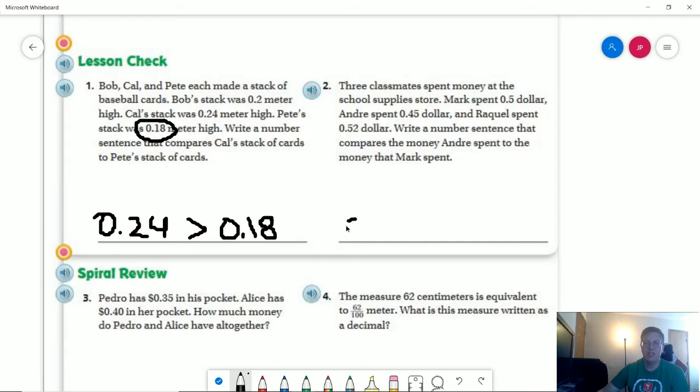Andre spent forty-five hundredths of a dollar, or forty-five cents. Mark spent fifty cents, or five tenths of a dollar. So forty-five hundredths would be less than five tenths.